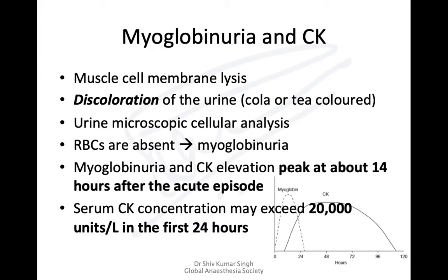Myoglobinuria results from muscle cell membrane lysis. Urine can be cola- or tea-colored and can be assessed by microscopy or a dipstick test. Myoglobin rises early, while CK elevation occurs after about 14 hours, peaking at very high levels of almost 20,000 units per liter in the first 24 hours.